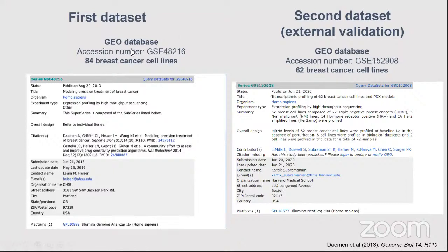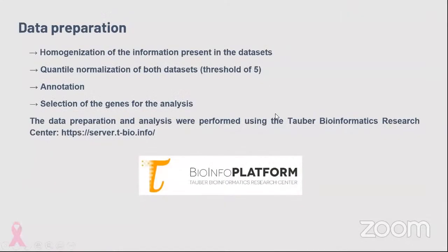The two datasets used in this project: the first is based on an article on modeling precision treatment of breast cancer, and the second is a more recent dataset used for external validation, from a professor at Harvard Medical School. For data preparation, the first step was to homogenize the information in the datasets. I employed quantile normalization with a threshold of five, followed by annotation, selection, and analysis. Everything was performed at the Tower Bioinformatics Research Center.